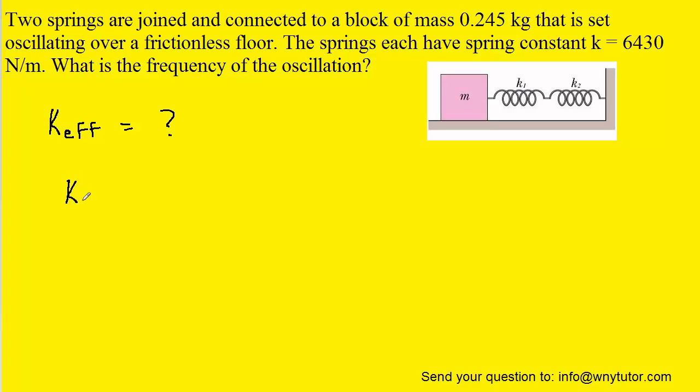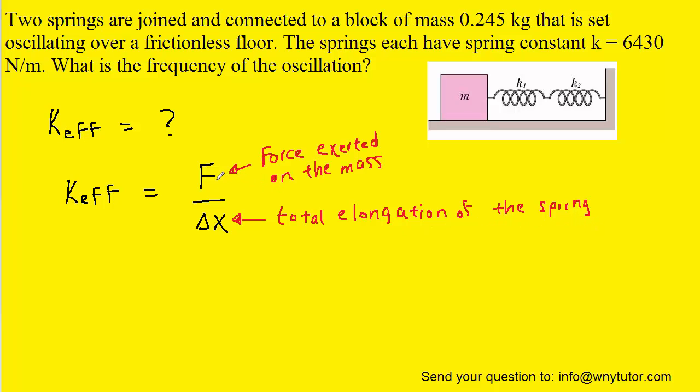The effective spring constant has to obey Hooke's Law. So we could set the effective spring constant equal to F divided by some displacement, delta x. Delta x would represent the total elongation of the spring, and F is the force exerted on the mass.